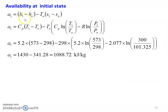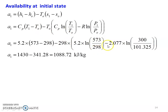Availability at the initial state: A1 equal to H1 minus HO minus TO into S1 minus SO. For helium gas, H1 minus HO equal to CP into T1 minus TO. And S1 minus SO equal to CP into logarithmic of T1 by TO minus R into logarithmic of P1 by PO. Substituting numerical values: A1 equal to 5.2 into (573 minus 298) minus 298 into [5.2 into ln(573/298) minus 2.077 into ln(300/101.325)]. First term: 1430, second term: minus 341.28, giving A1 equal to 1088.72 kJ per kg.